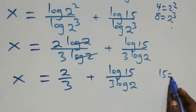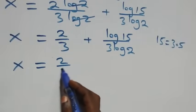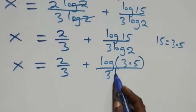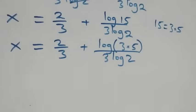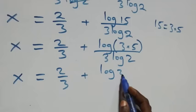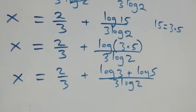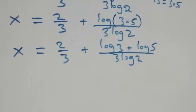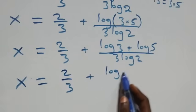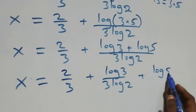Here we can also express fifteen as three times five. Then what we have becomes x equals two over three plus log of three times five, all over three log two. We also apply the law of logarithm and express this as x equals two over three plus log three plus log five, all over three log two. Separating the fractions: x equals two over three plus log three over three log two, plus log five over three log two.